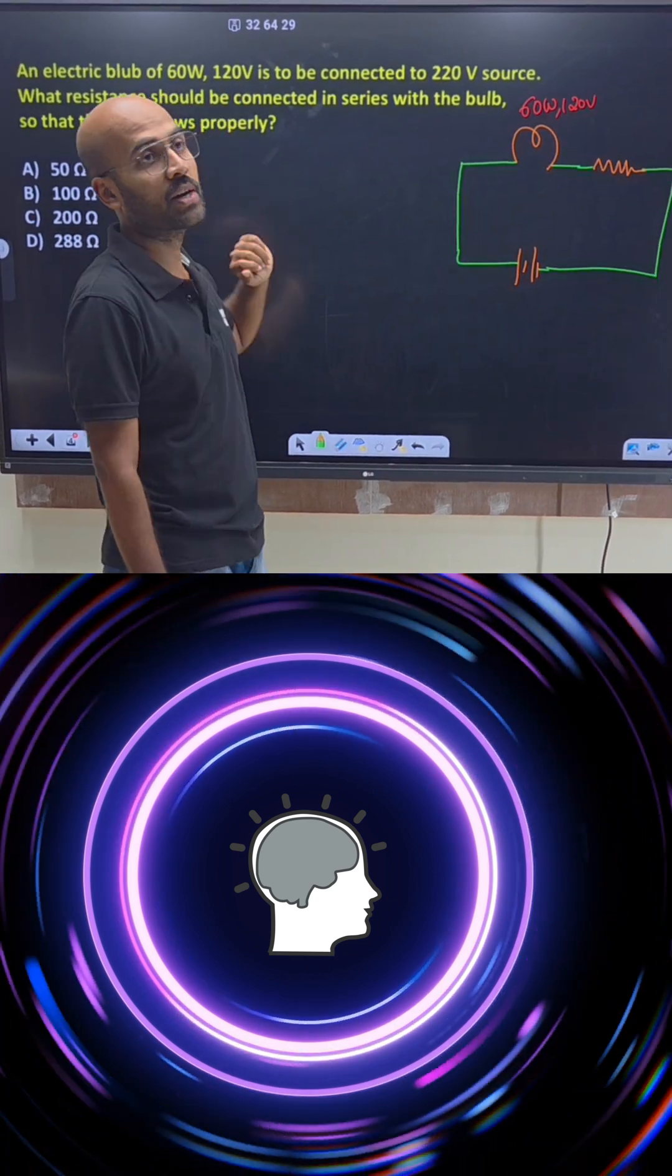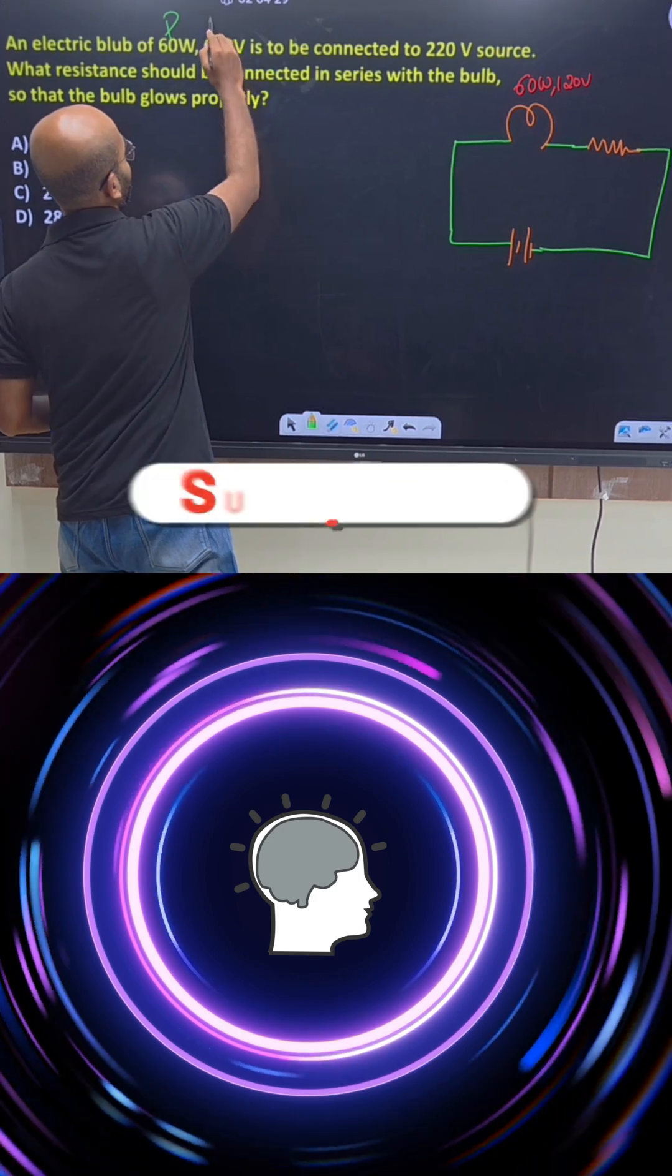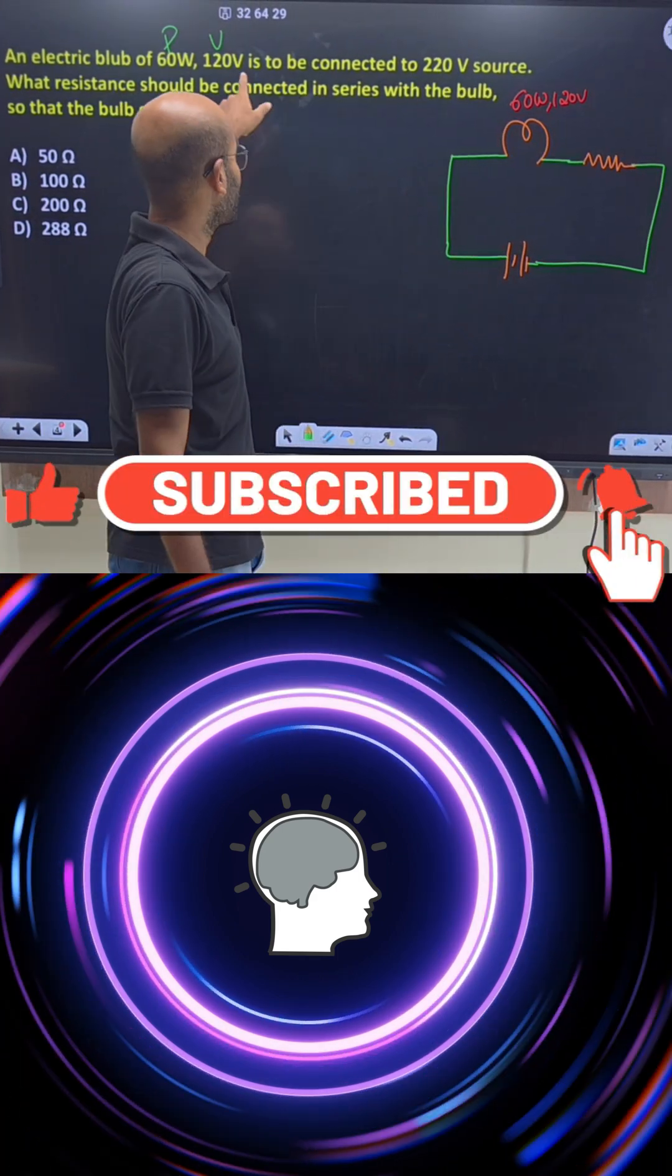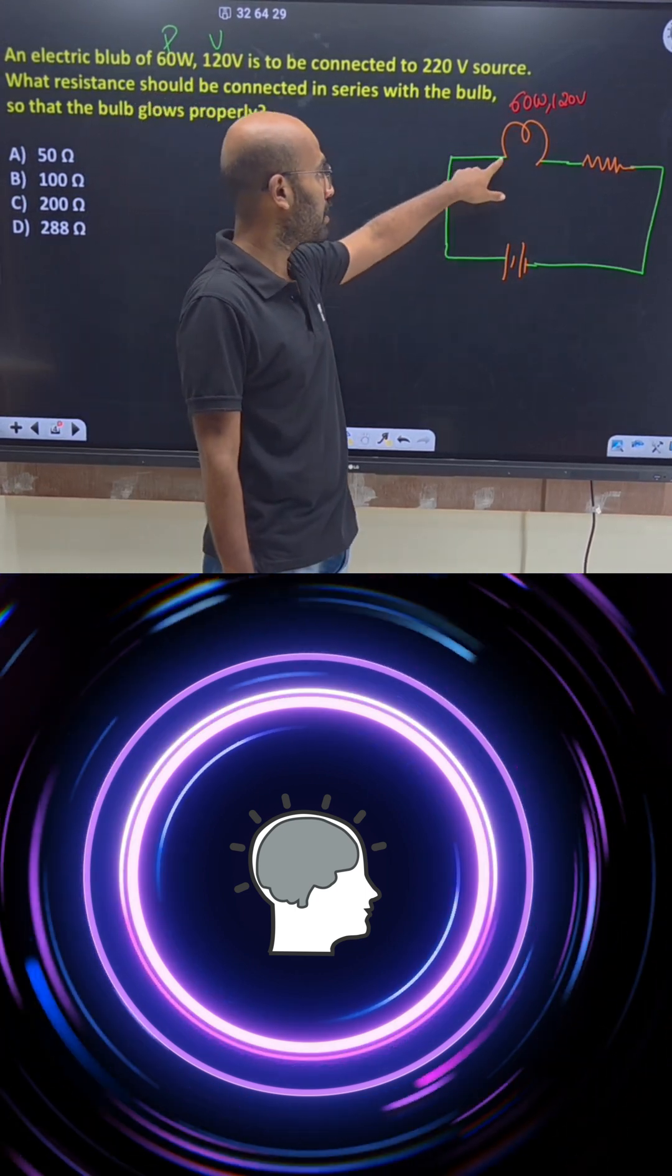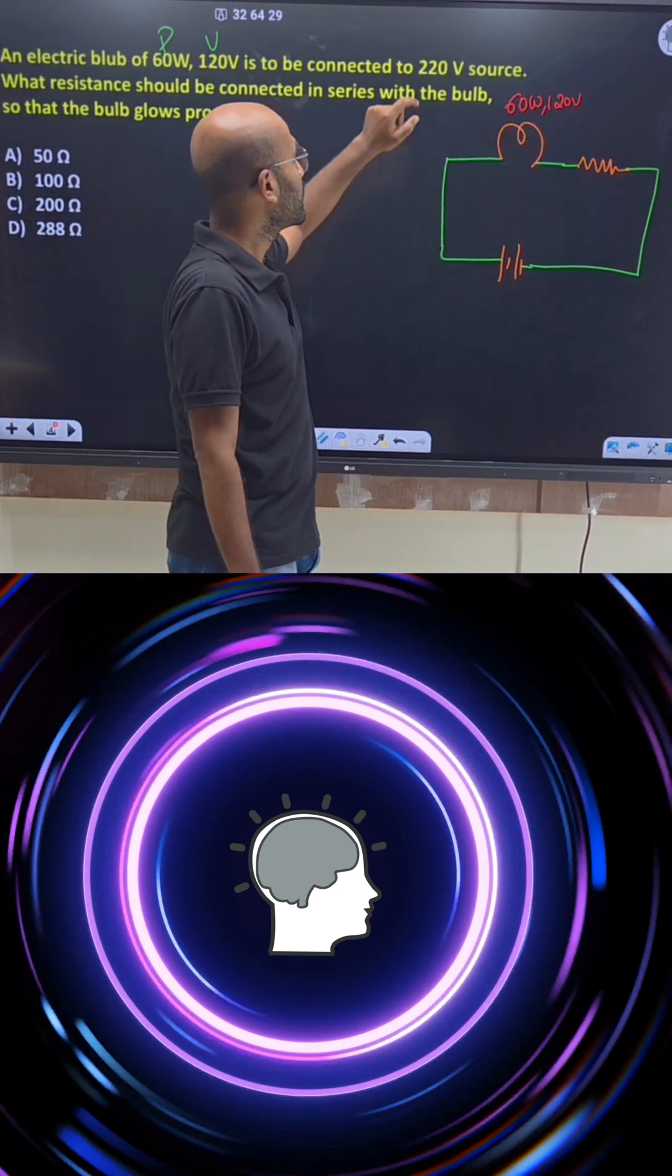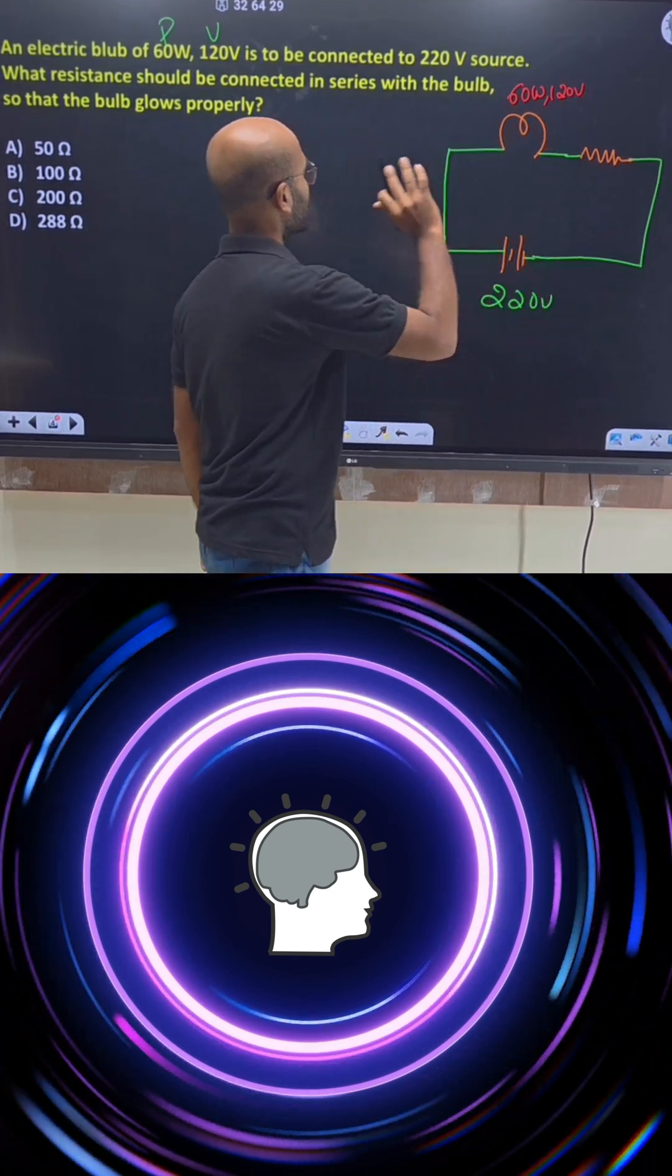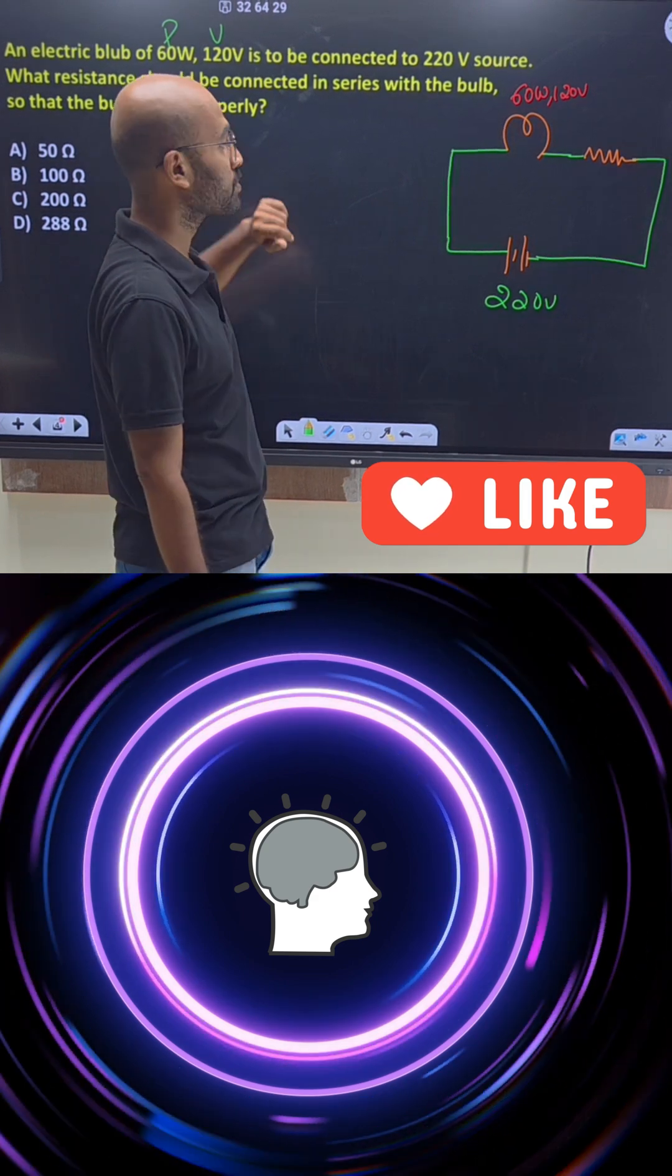An electric bulb of 60 watt, 120 volts. So 60 watt power, 120 volt potential difference. This should be connected to 220 volt source. What resistance should be connected in series with the bulb so that the bulb glows properly?